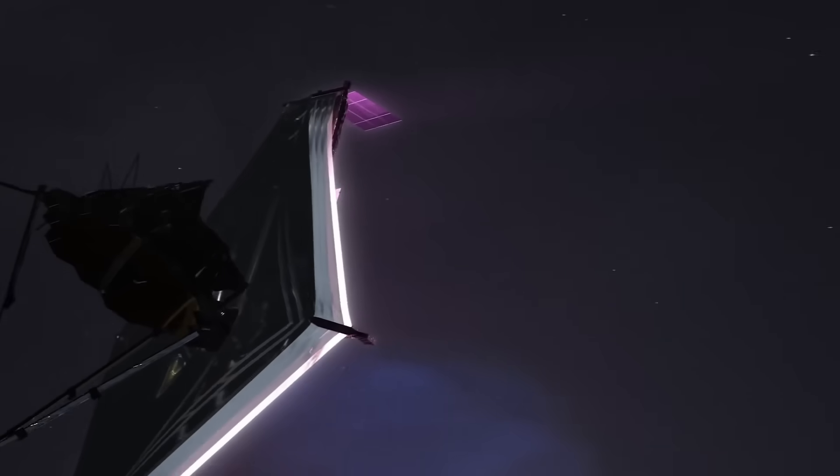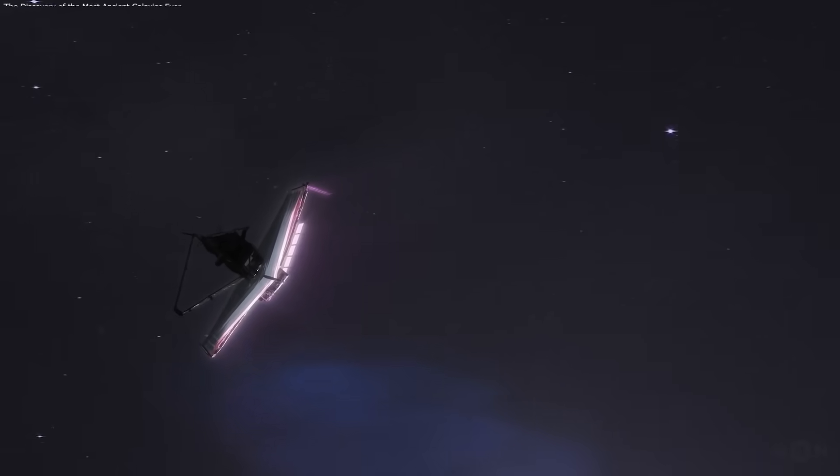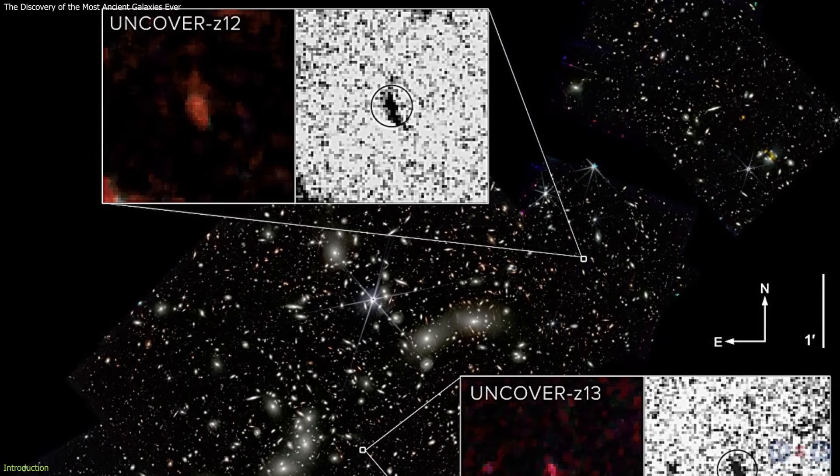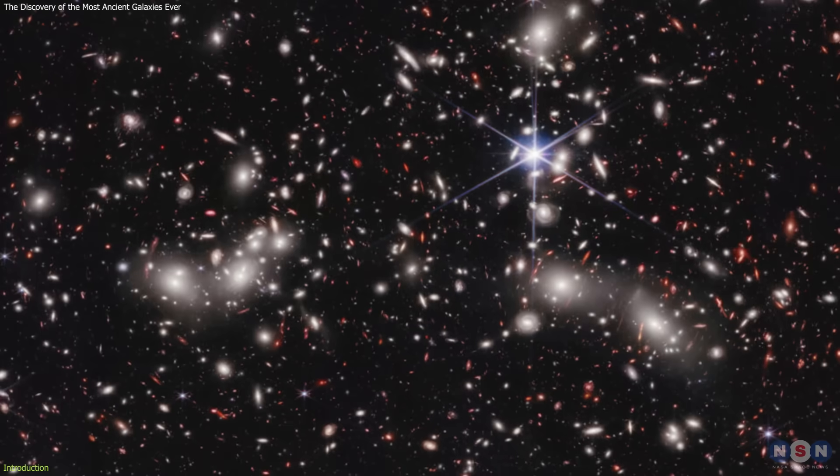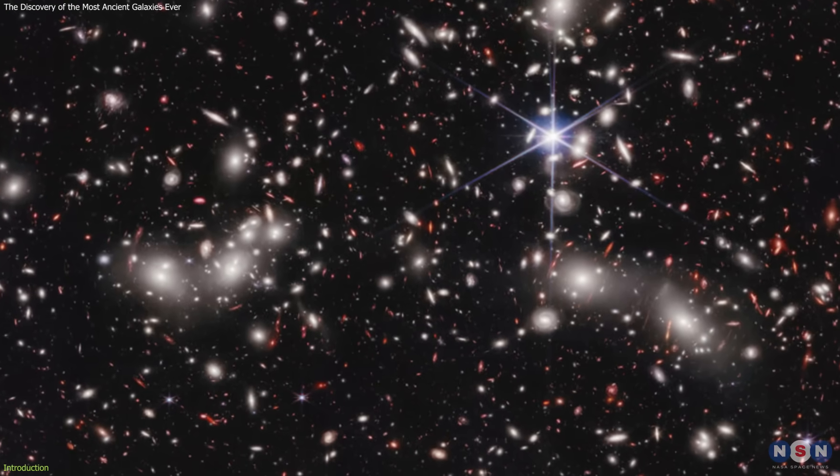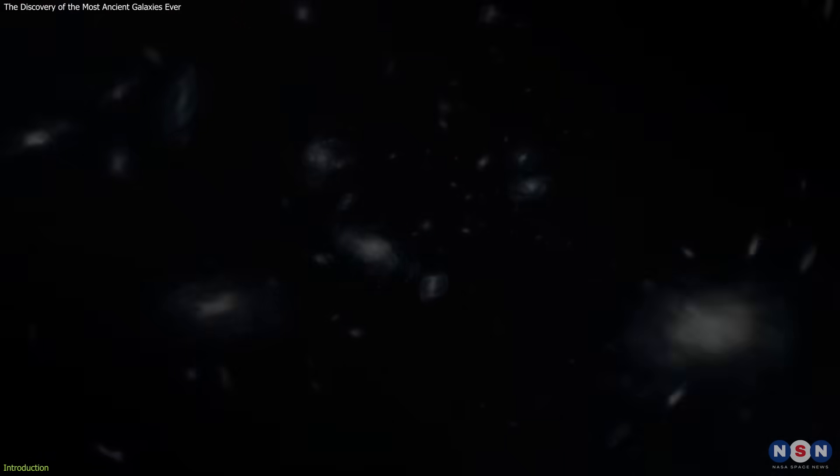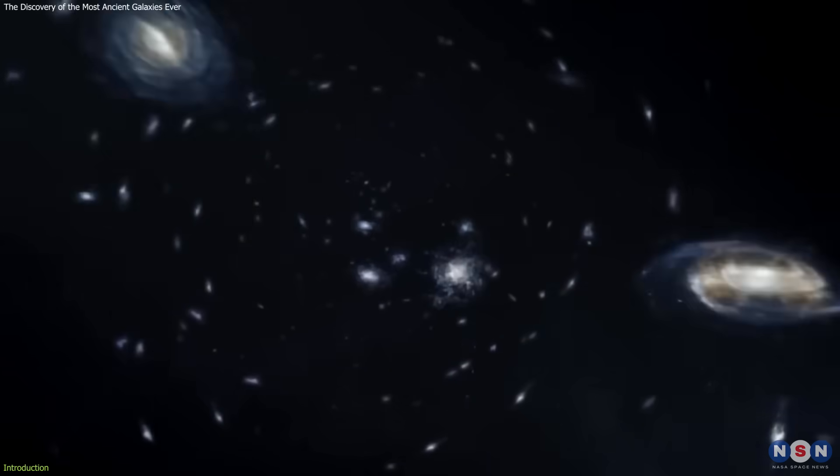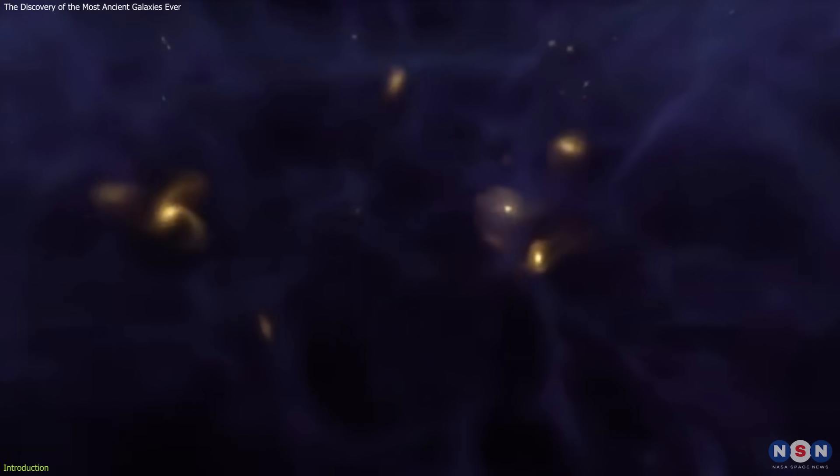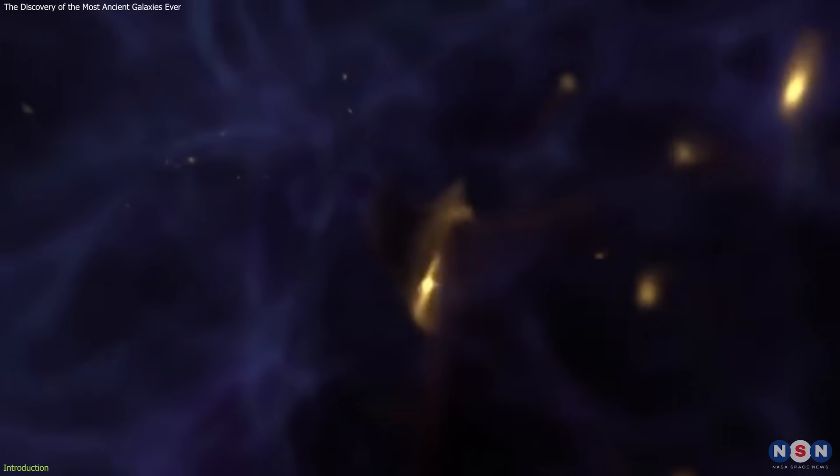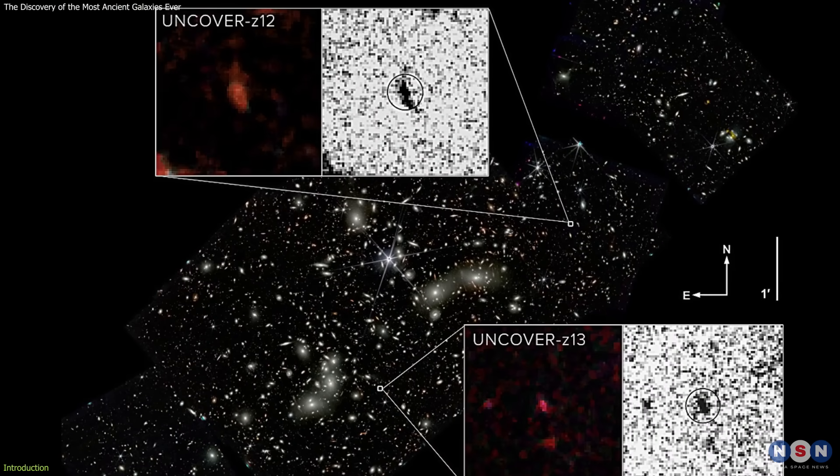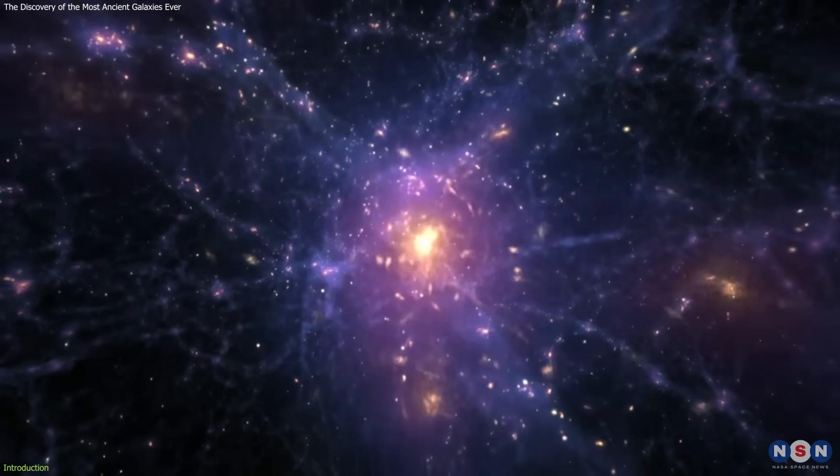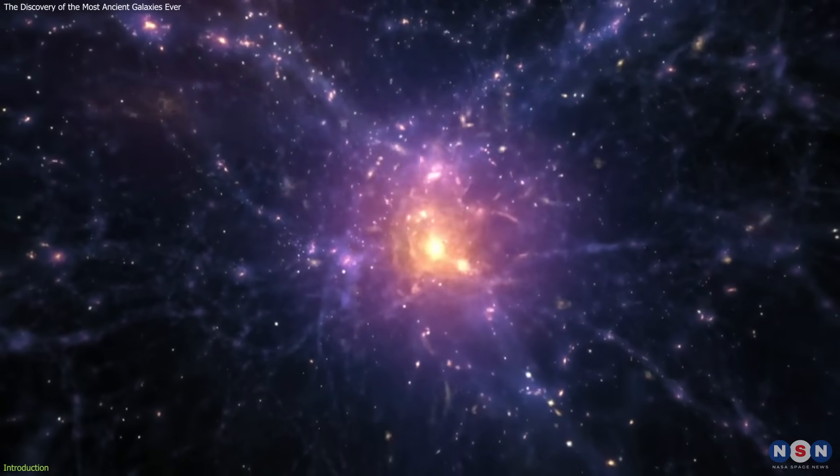James Webb has made a new breakthrough in the exploration of the early universe, discovering the second-most and fourth-most distant galaxies ever observed, which are located in a region of space known as Pandora's Cluster. These ancient galaxies are more than 13 billion light-years away from us, and they formed when the universe was only about 400 million years old. They are also very different from each other and from the galaxies that we see today, revealing the diversity and complexity of the cosmic history.